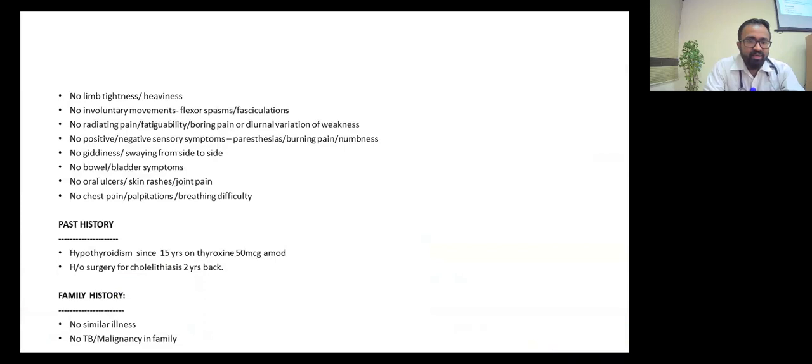There was no history of limb tightness, recurrent tripping, or involuntary movements. She had no positive or negative sensory symptoms like paresthesias, numbness, or burning pain, and no bowel or bladder symptoms. Past history: she is a known hypothyroid for 15 years with no significant family history.